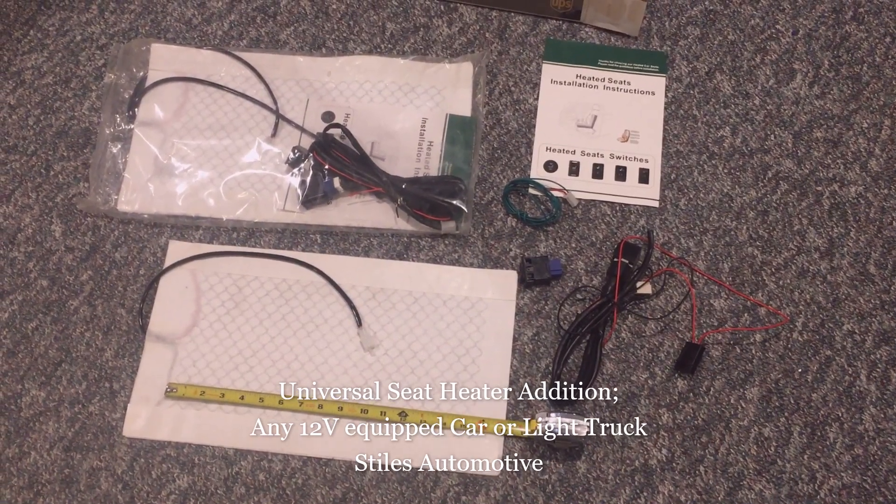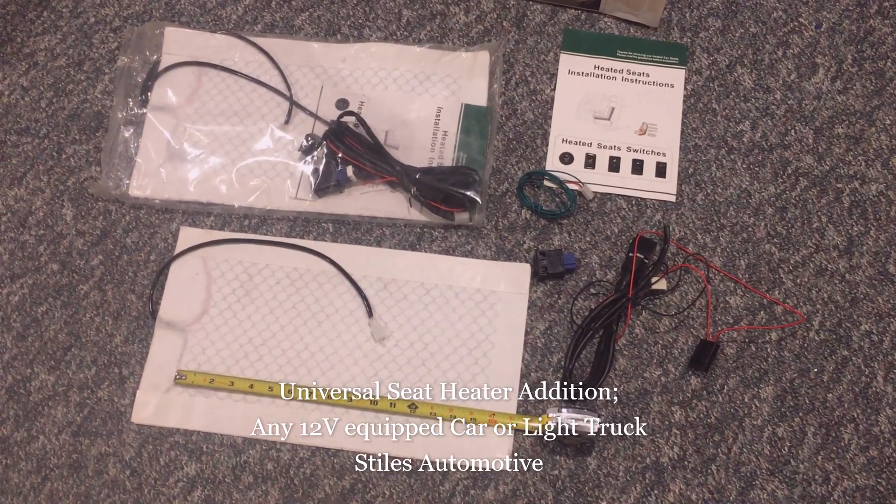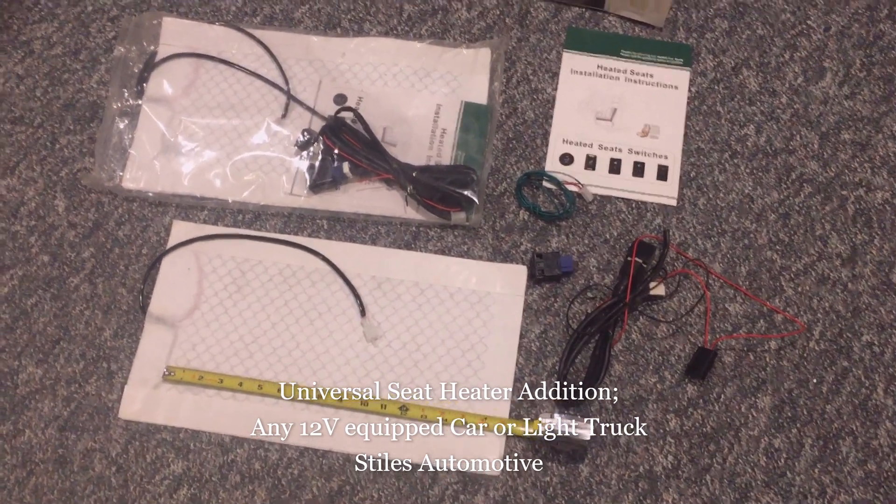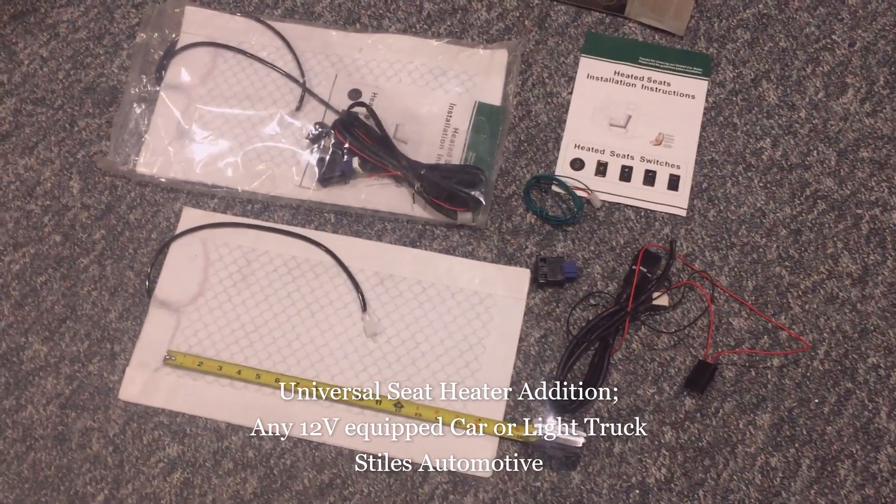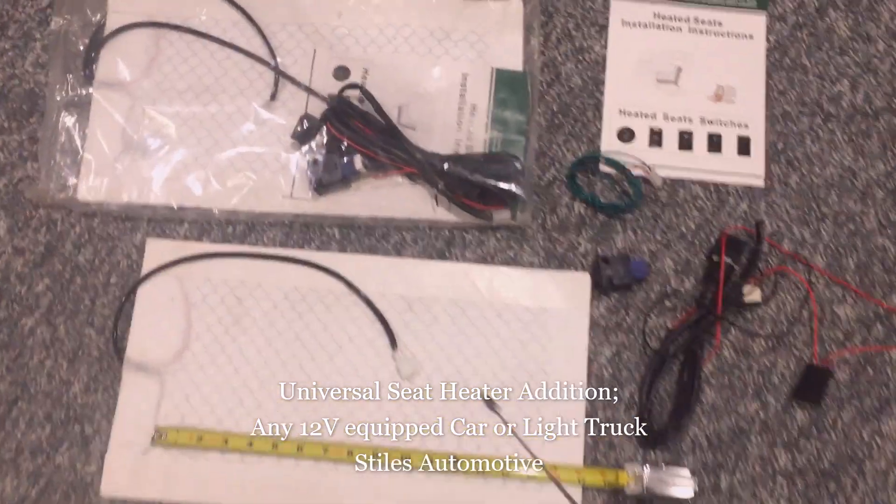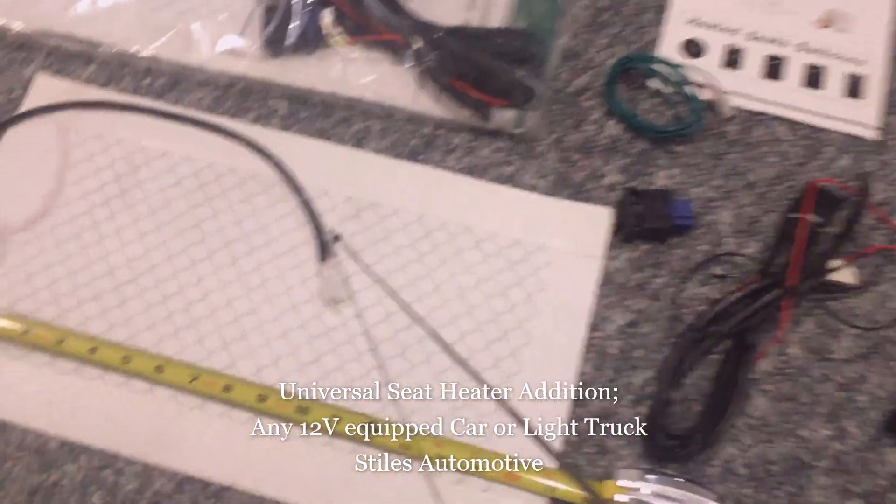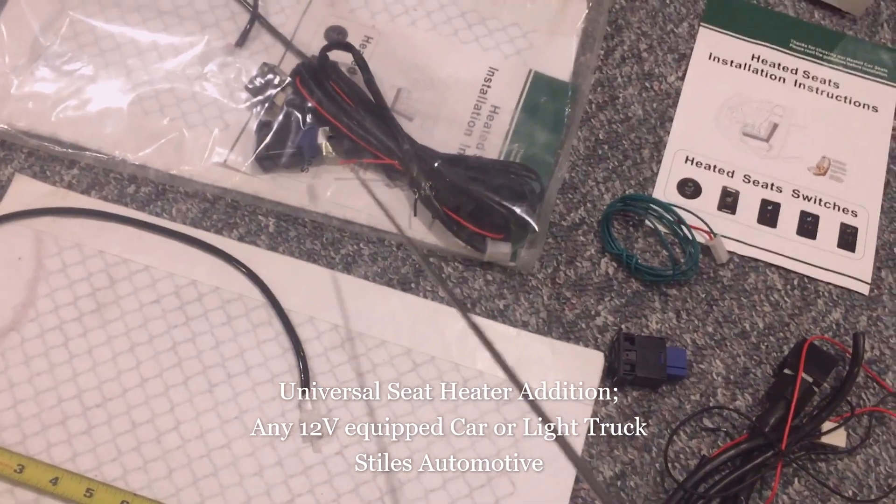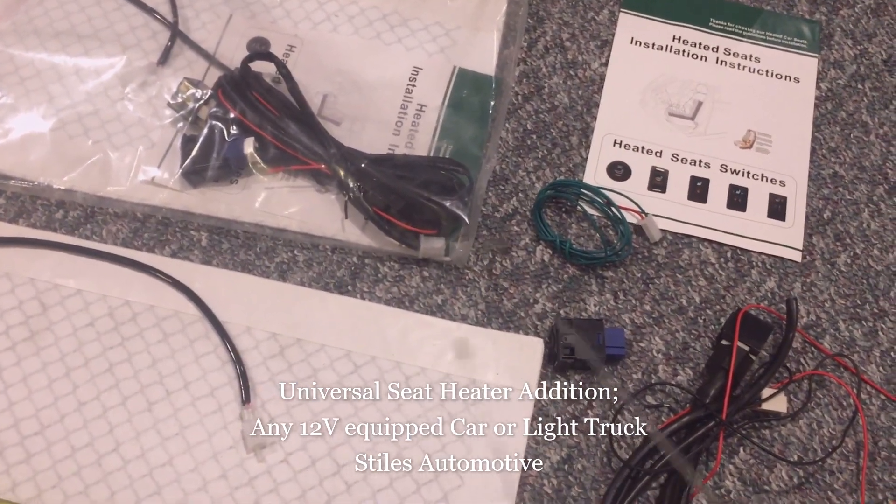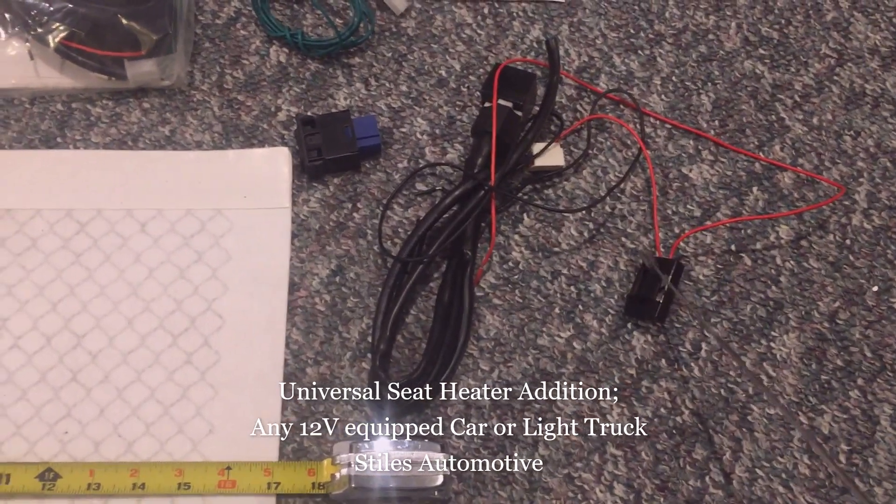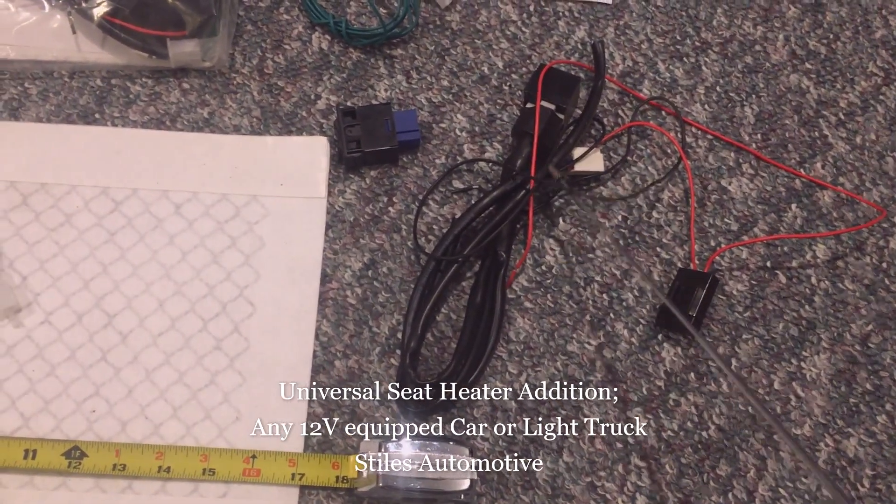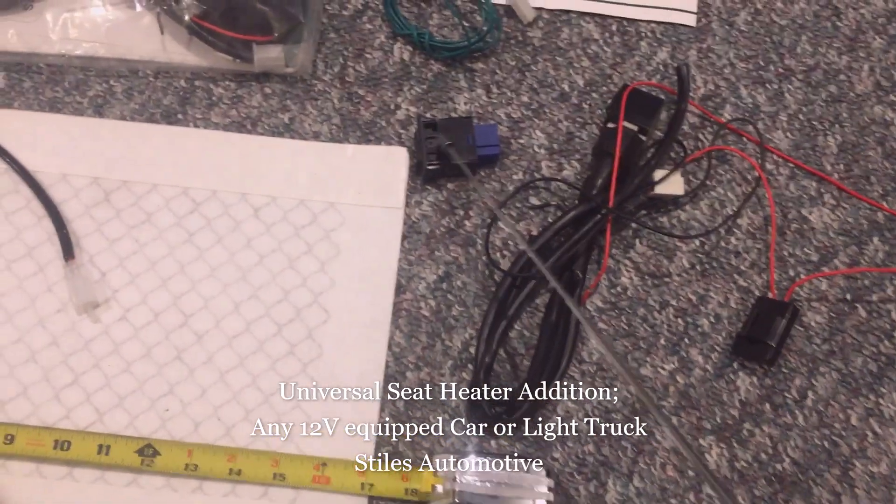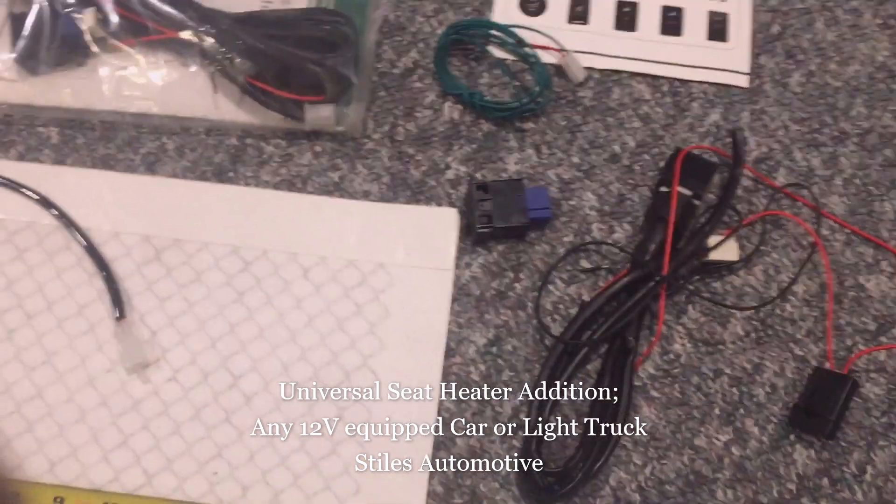So I bought these Universal kits from Amazon and I'll show you the Amazon page, but real quickly I'll show you the package here. It comes with four of these heating elements and the wiring harnesses to wire them in. They also come with a fuse box, which I didn't use, and a relay so that you're not overpowering the switch.